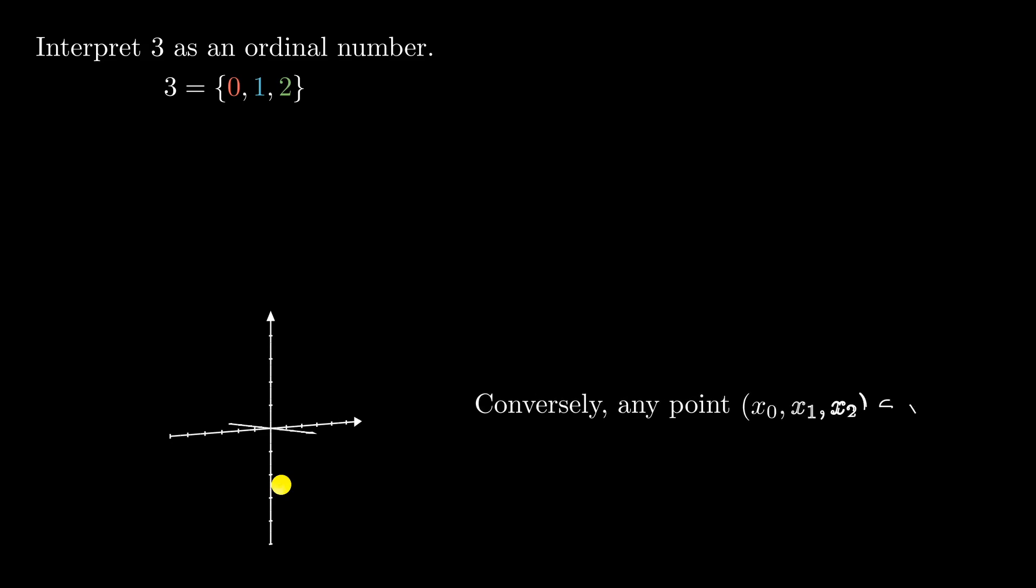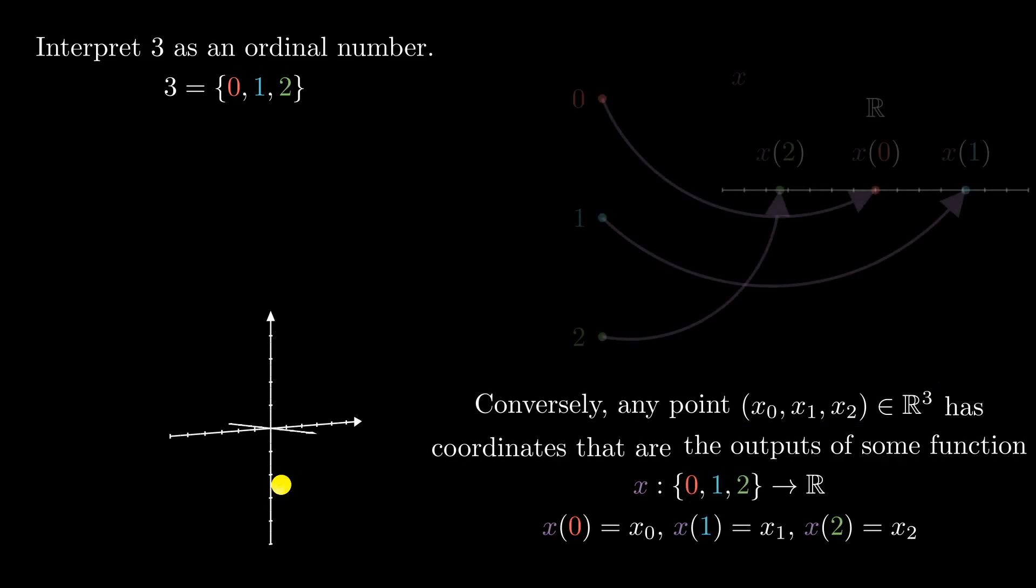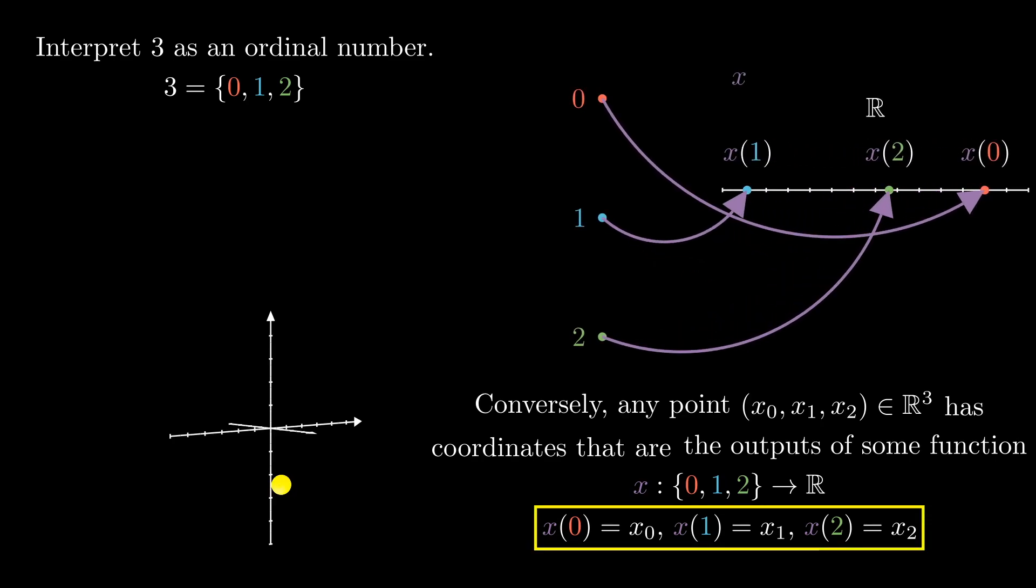Conversely, given any point in space, say its coordinates are x0, x1, and x2, we can define a function x from the ordinal number 3 to the reals by sending 0, 1, and 2 to each of x0, x1, and x2 respectively.